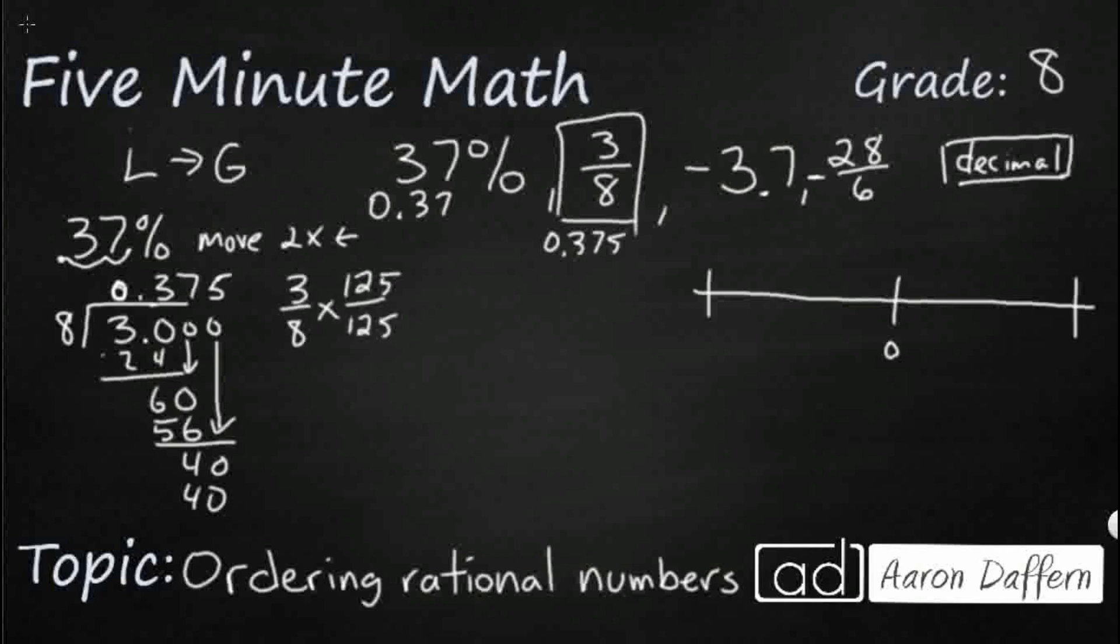Anytime you get a fraction that has a denominator of 8, just multiply top and bottom by 125, and you're going to get 375 over 1,000 because 8 times 125 makes 1,000. And guess what you get? 375 thousandths.